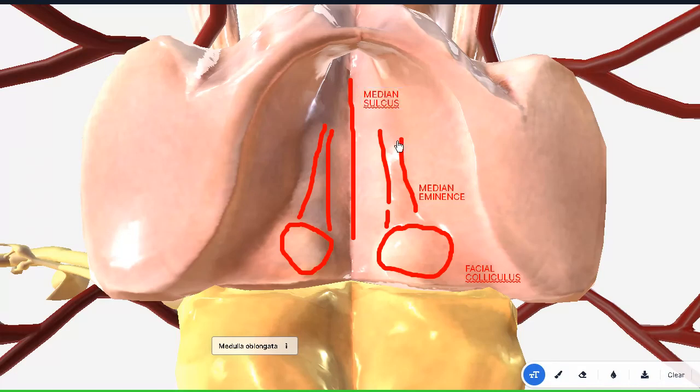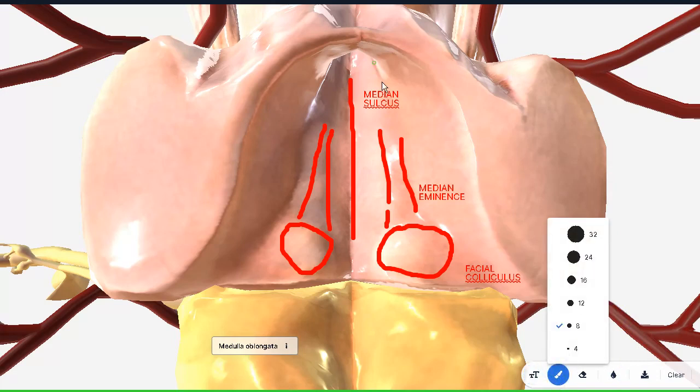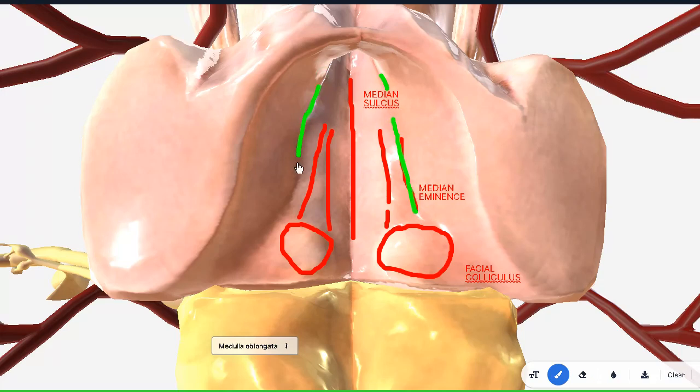Now, as the median eminence goes upwards, it meets at the center point right here. The border, the outermost border of the median eminence, that is termed as the sulcus limitans. And I've demarcated with a green marker, like so. This is the sulcus limitans. These are the things that they will ask in the viva not so much in the SAQ or MCQs, but their positions are still important nonetheless.